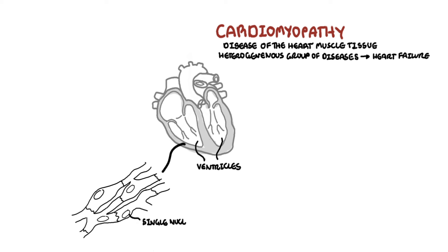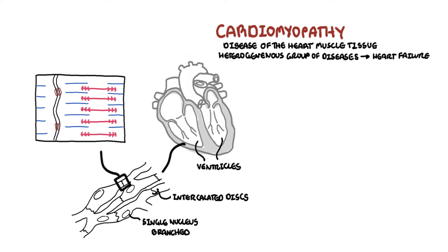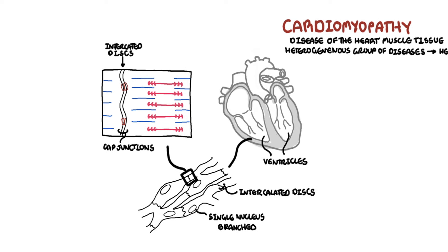The cardiac muscle fibers or cells have a single nucleus. They are branched and joined to one another by intercalated discs. The intercalated discs contain gap junctions, and together they form a syncytium of cardiac cells, allowing the heart to contract in a coordinated, unified manner.